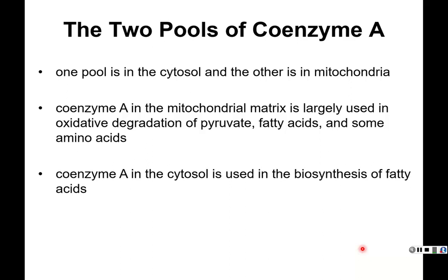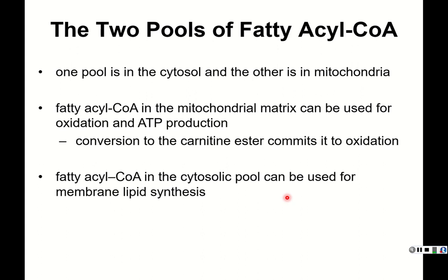The CoA in the mitochondrial matrix is largely used for oxidative degradation of pyruvate, fatty acids, and some amino acids. CoA in the cytosol is used primarily for biosynthesis of fatty acids. Similarly, fatty acyl-CoAs in the mitochondrial matrix are used for oxidation and ATP production, while those in the cytosol can be used for membrane lipid synthesis.